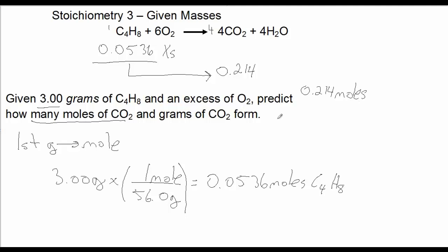To answer the question of how many grams of CO2 will be produced, simply follow that same procedure as last time. Convert 0.214 moles of CO2 to grams of CO2 using the molar mass of CO2, which was 44. So if you multiply 44 times 0.214, I end up with 9.43 grams of CO2.